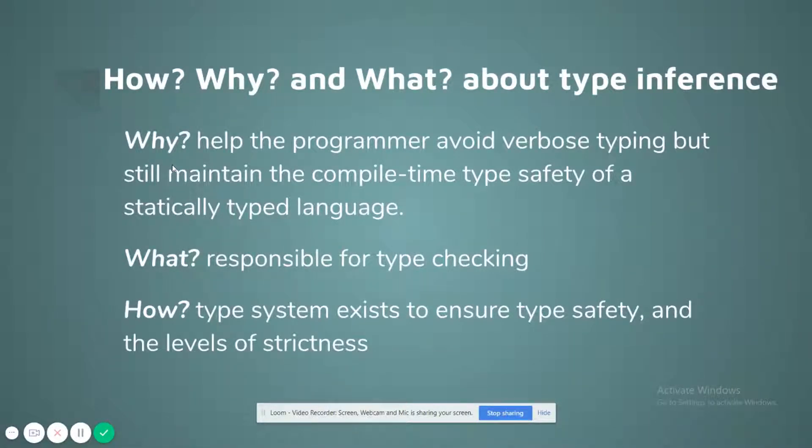The next question to follow is why do we have Type Inference? The sole purpose of having Type Inference is to help the programmer avoid verbose typing but still maintain the compile type safety of a statically typed language. Following it is another question: what is a type system? The type system is a language component that is responsible for type checking. Scala is a statically typed language, so there are always defined sets of types, and anything that doesn't fall inside that set is classified as an invalid type and an appropriate error is thrown at compile time.